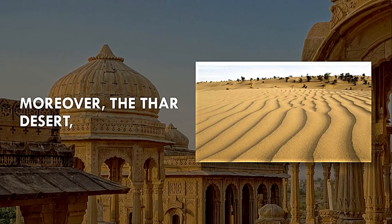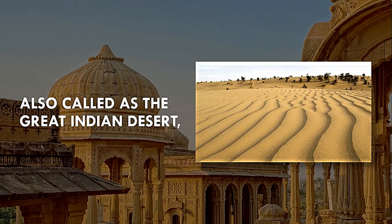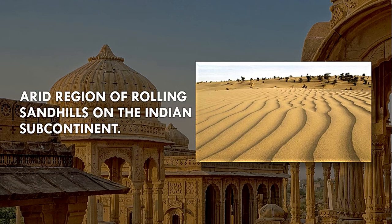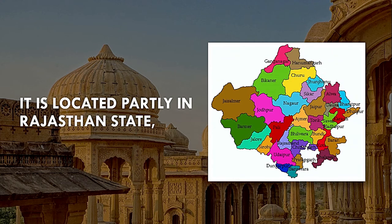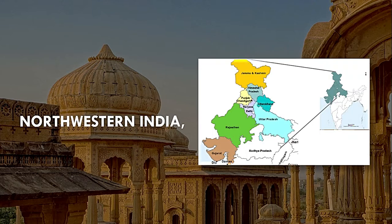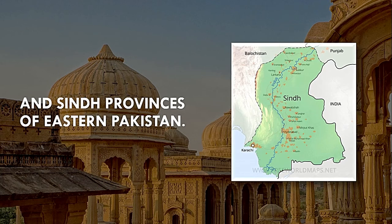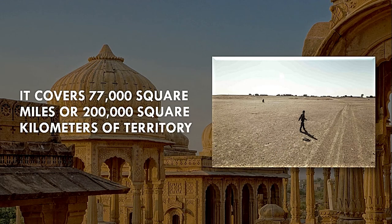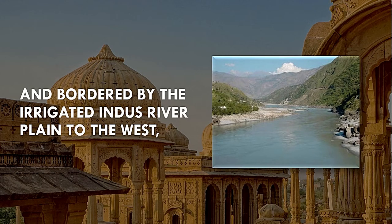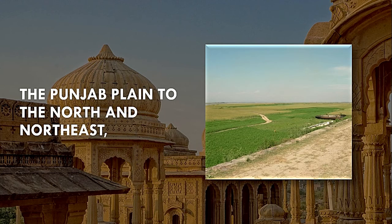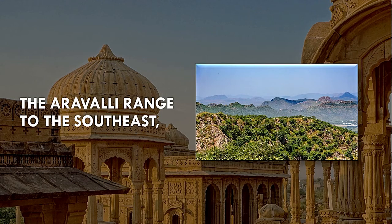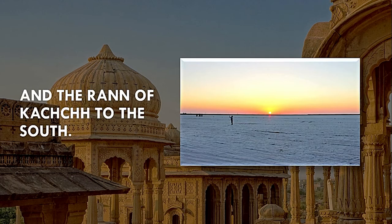Moreover, the Thar Desert, also called the Great Indian Desert, is an arid region of rolling sand hills on the Indian subcontinent. It is located partly in the Rajasthan state, northwestern India, and partly in Punjab and Sindh provinces of eastern Pakistan. It covers 77,000 square miles or 200,000 square kilometers of territory, and is bordered by the irrigated Indus River plain to the west, the Punjab plain to the north and northeast, the Aravalli range to the southeast, and the Rann of Kutch to the south.